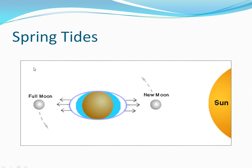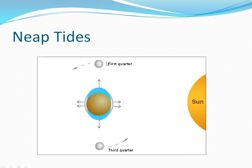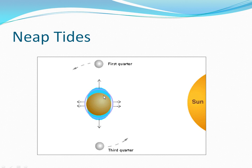Spring tides happen twice a month, so it's not spring in the seasonal sense. It's spring as in the boing, boing, boing sense — you've got super high tides and super low tides. Neap tides happen at the first and third quarter, when the moon is at right angles to the earth as compared to the sun. The moon is pulling this way and the sun is pulling this way. They counteract each other, so the high tides don't get very high and the low tides don't get very low. So it's called a neap tide — not a high high, not a low low. It barely changes just a little bit.